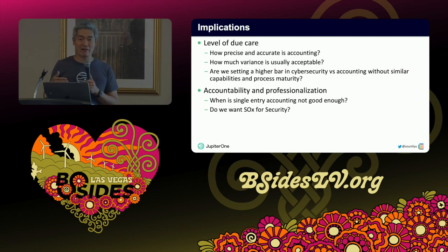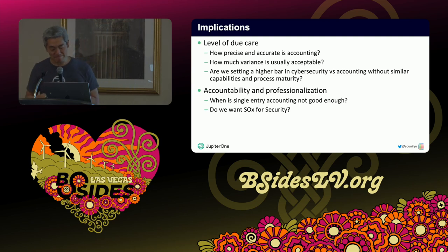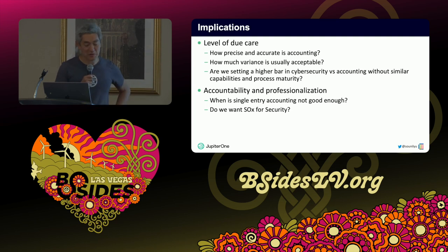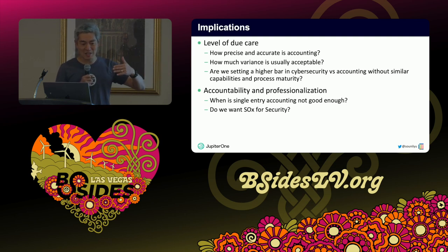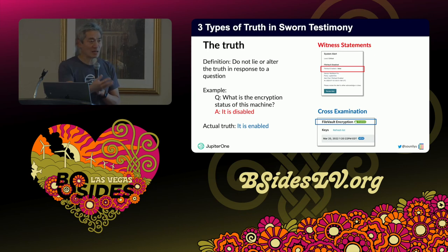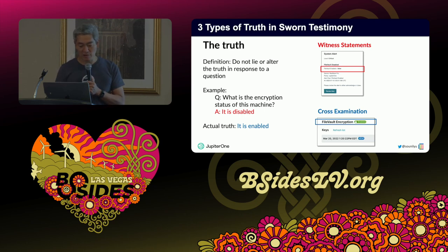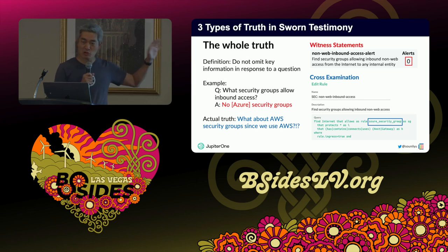I'll leave it with this question: do we want something like Sarbanes-Oxley for security? It comes with penalties if you don't do it right. But as I mentioned earlier, we're already getting penalized — with lawsuits, SEC fines, and in some cases criminal prosecution — because we don't have these practices well understood. Now, this is just one example of an accounting principle. There are other systems that may seem like double entry accounting but actually end up being more single entry accounting — that's where it goes back to the truth question: confirming compliance is just cross-examination of the truth, not double entry. The whole truth is a really hard problem, but double entry accounting helps us address it. Questions?